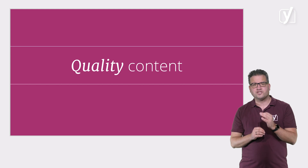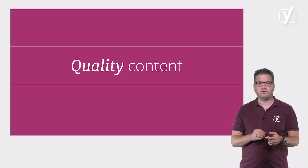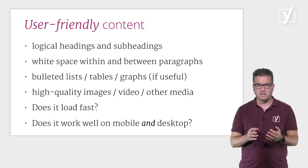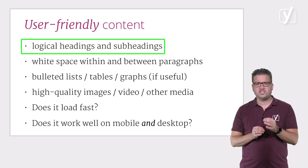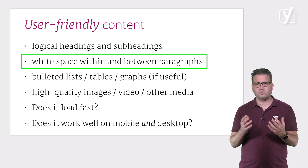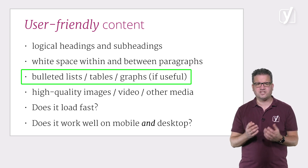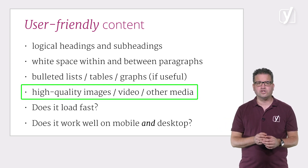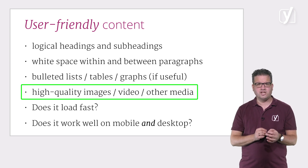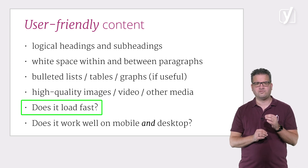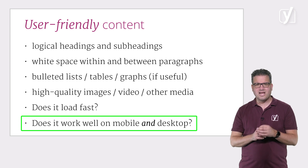Whatever you go with, there are two benchmarks of high-quality content: it should be user-friendly and the quality of the texts and the media you use should be sky-high. But what does user-friendly content even mean? To start with, you should make sure that each section of the post is divided with logical headings and subheadings. Don't forget to also add white space within and between paragraphs. When necessary, you should put information in bulleted lists, tables or use graphs. Of course, adding appropriate high-quality images, videos and other media is also essential. Finally, you will need to check that your media loads fast and that it works well both on mobile and desktop.